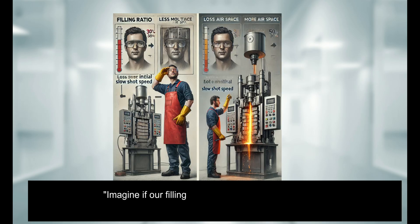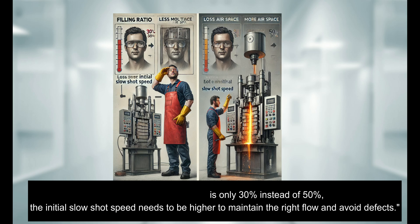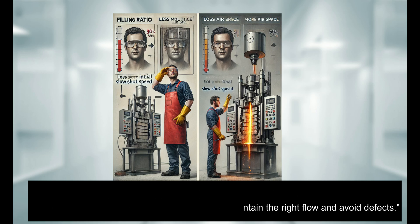Here is the formula to calculate the critical slow shot speed. VCC is the critical slow shot speed, FI is the initial filling ratio, DPT is the plunger diameter, and CCC is the constant. For example, if our filling ratio is only 30% instead of 50%, the initial slow shot speed needs to be higher to maintain the right flow and avoid defects.